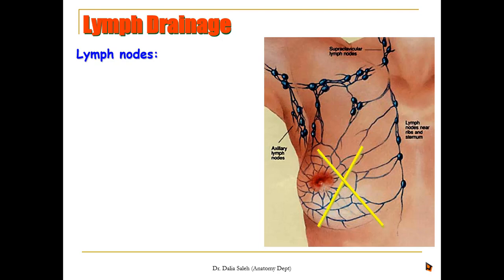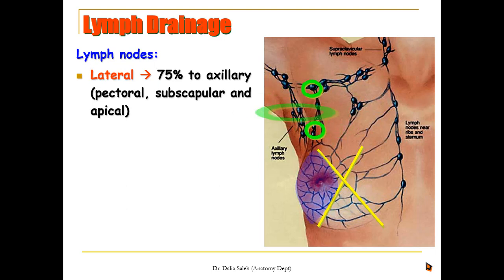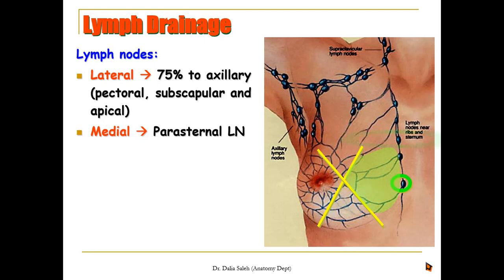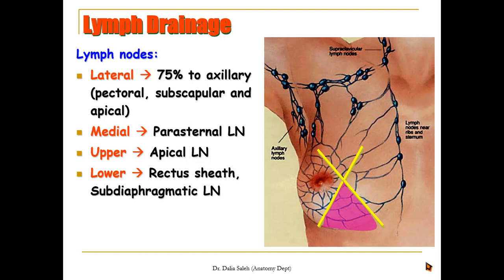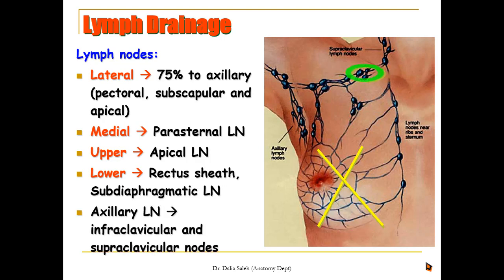Regarding the lymph nodes draining breast tissue, we divide the breast into four quadrants. The lateral part, representing about 75% of lymphatic drainage, drains into the axillary lymph nodes — specifically the pectoral group, subscapular group, or apical group. The medial part drains into the parasternal lymph nodes along the sides of the sternum. The upper part drains directly into the apical lymph nodes of the axillary group, while the lower part drains into the rectus sheath and subdiaphragmatic lymph nodes. The axillary lymph nodes eventually drain into the infraclavicular and supraclavicular lymph nodes.